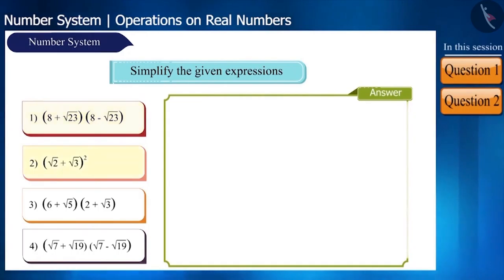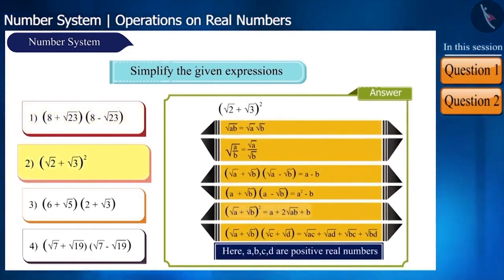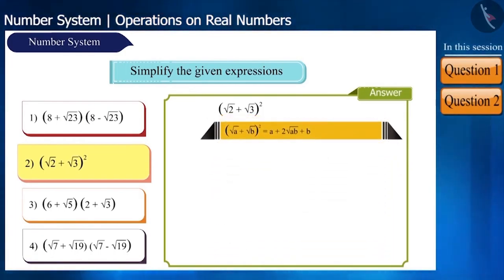Now look at the second expression. This looks like the identity root A plus root B square is equal to A plus 2 root AB plus B. Here, A is equal to 2 and B is equal to 3. We can solve this easily using this identity.